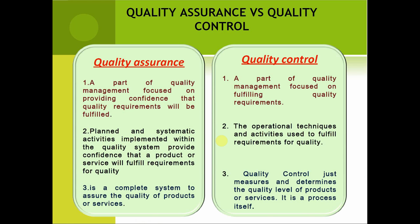In Quality Control, operational techniques and activities are used so that quality requirements will be fulfilled. Quality Assurance is a complete system which ensures that the quality of products and services will be available, whereas Quality Control is just a measure or determination which provides the quality level of products and services through the process.